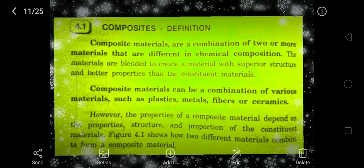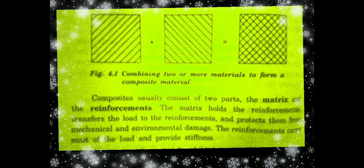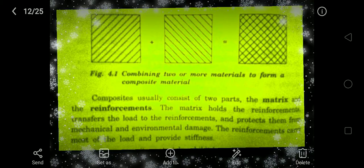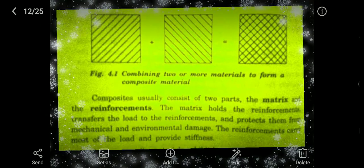The properties of composite materials depend on the properties, structure, and proportion of the base constituent material. Here is a picture: one kind of material is added or blended with another kind of material, and the result is the final composite. These two constituent materials are blended to give a composition of composite material.